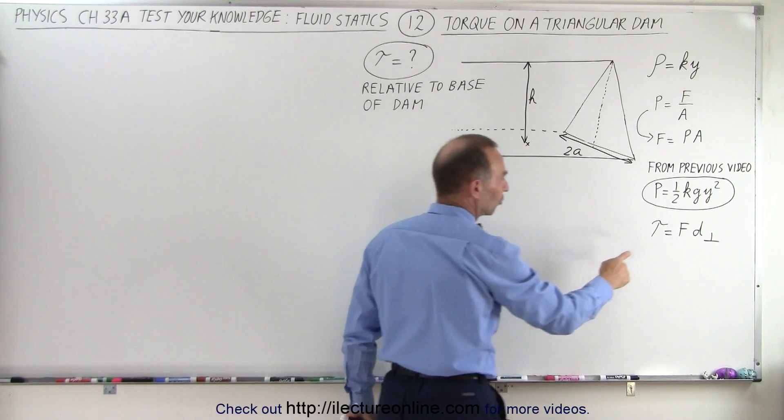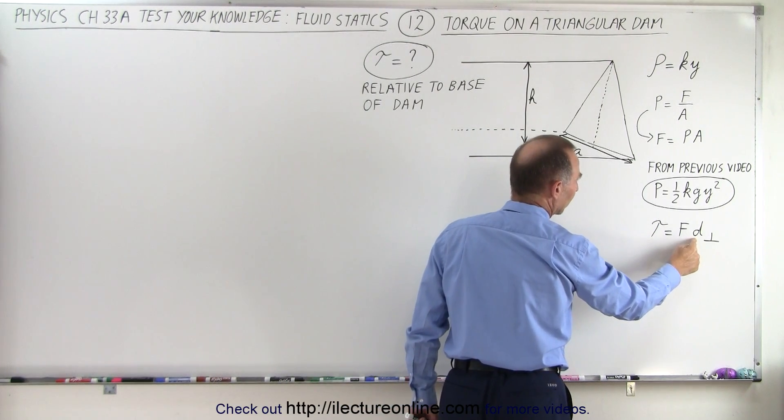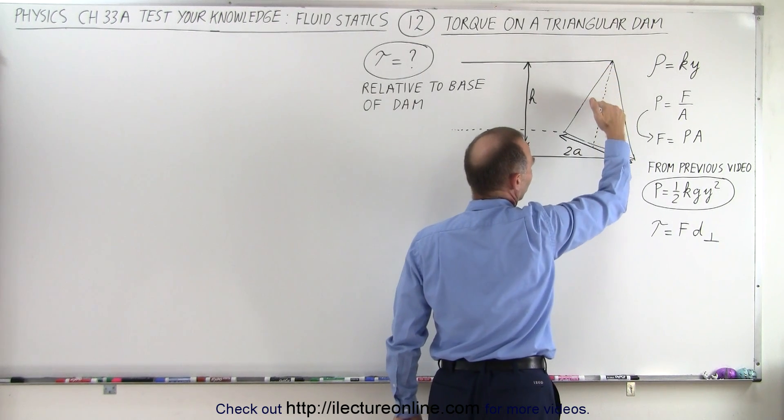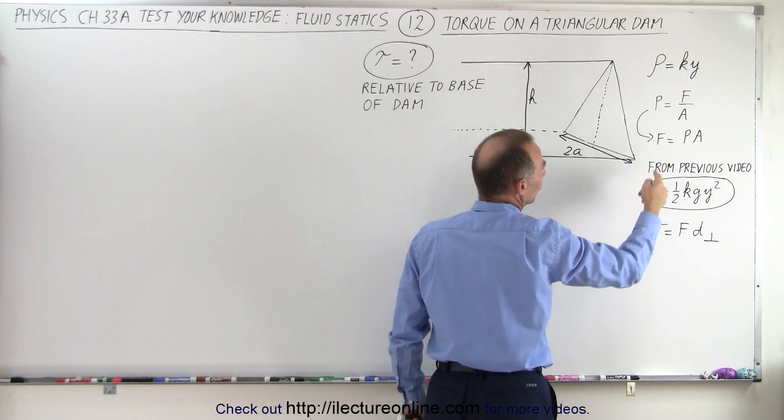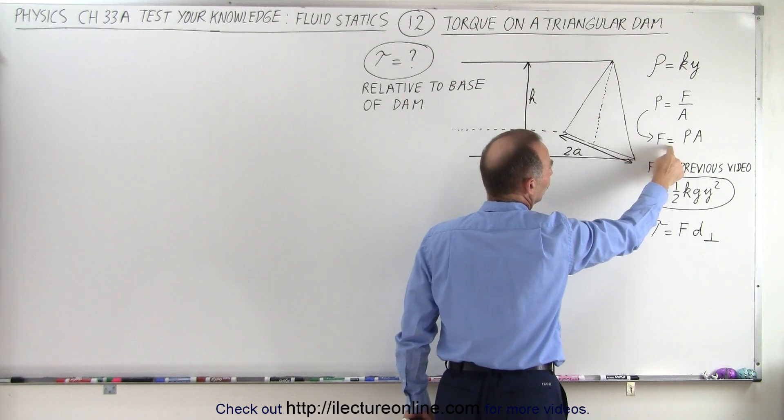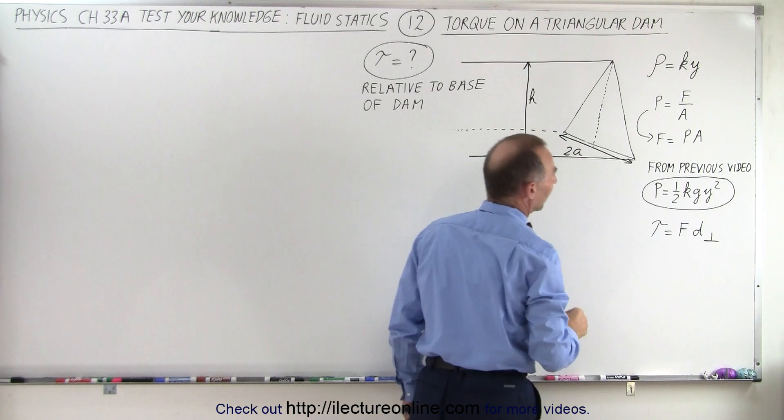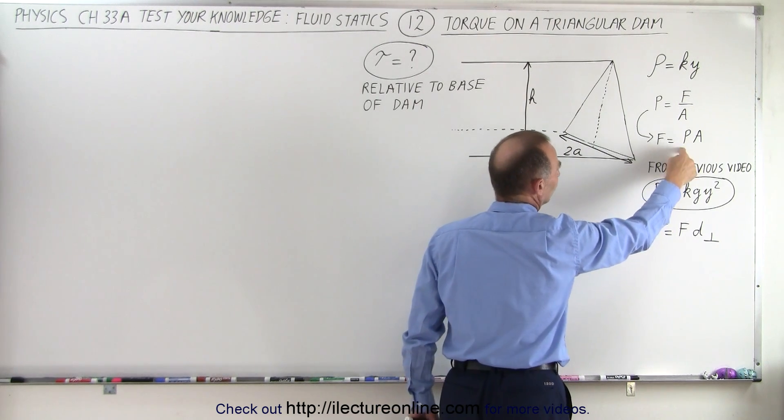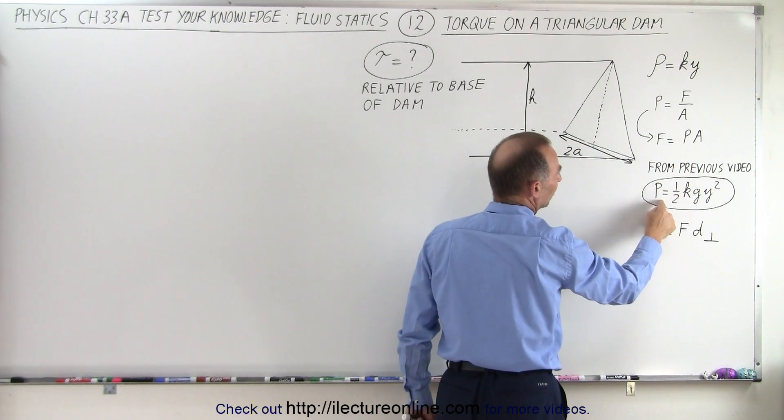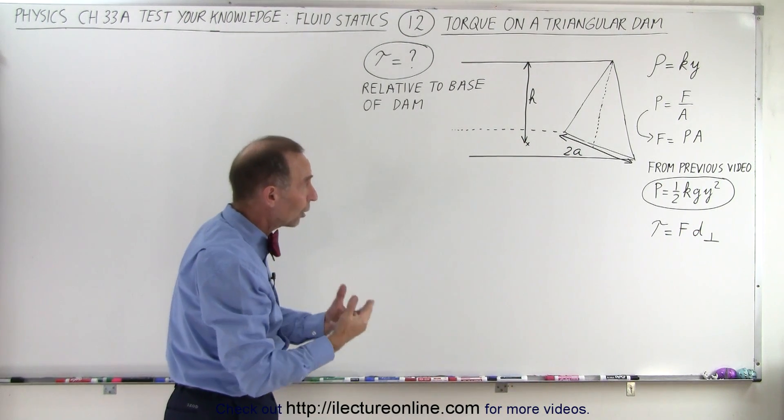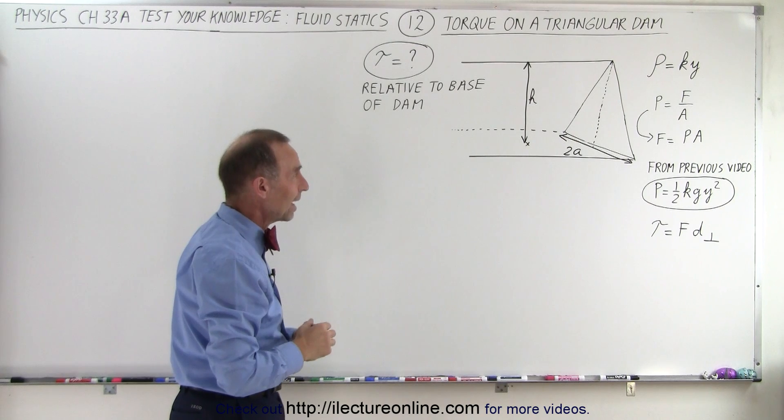Now notice the definition of torque is force times perpendicular distance, so we realize that the force on the dam is going to change as you go further and further into the liquid, because the pressure changes. Force is pressure times area, which comes from the equation pressure is force divided by area, and of course the pressure from the previous video was found to be 1 half kg y squared. So all that information together, how do we figure the torque of the dam?